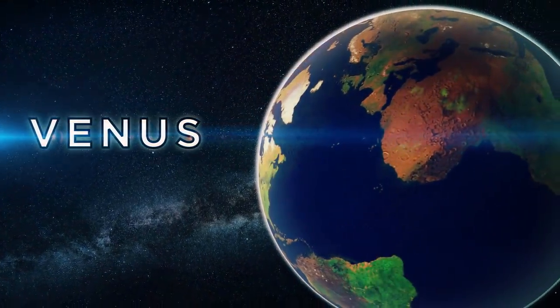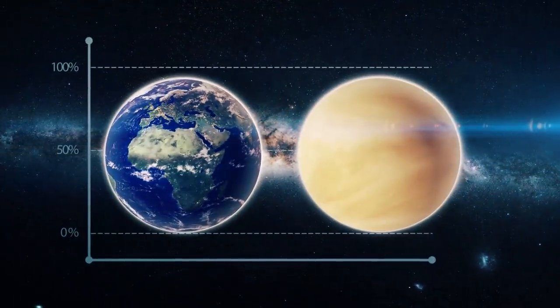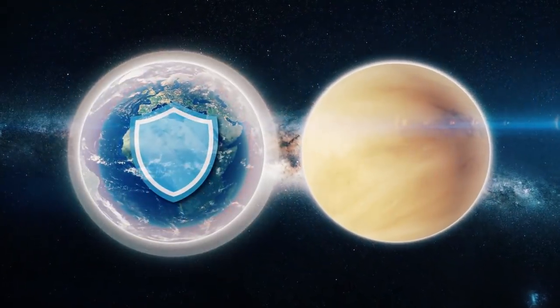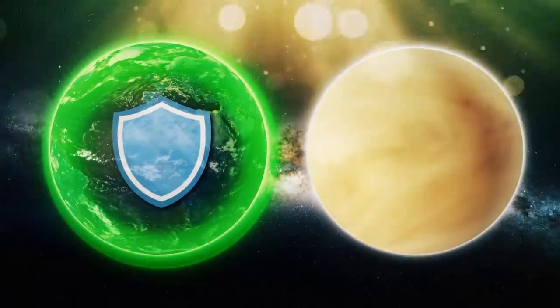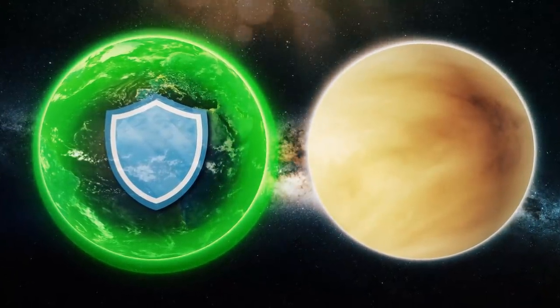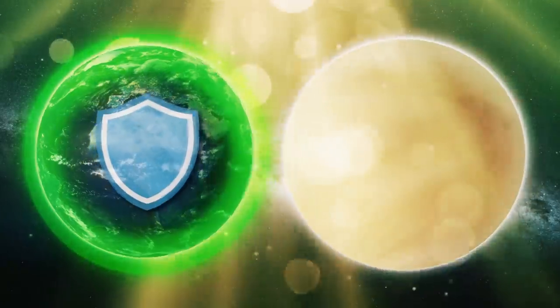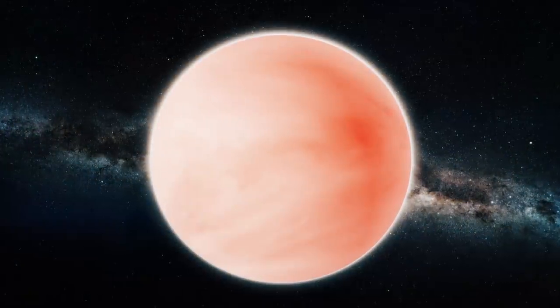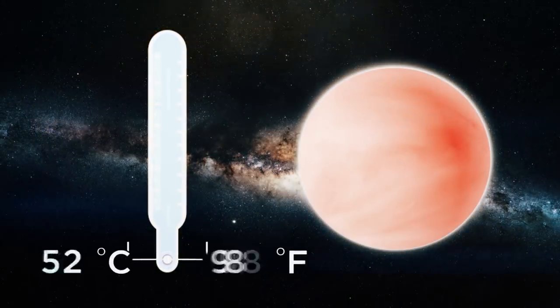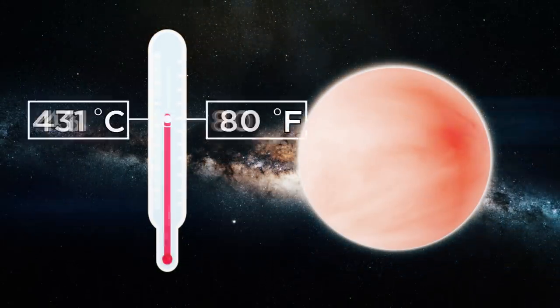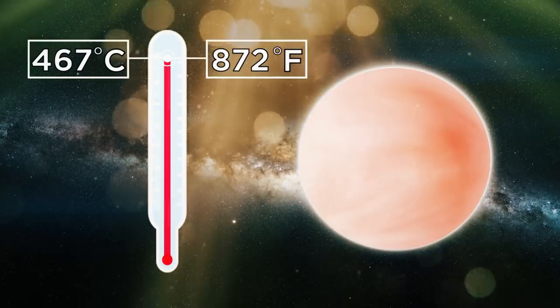This is what scientists believe happened to Venus, which long ago was covered by vast oceans. Venus is quite similar to the Earth in terms of both size and gravity. One key difference between the two is that Venus does not create its own magnetic field. Solar wind carries an electrical charge that our own magnetosphere is able to deflect, but Venus is not so lucky. Its water evaporated long ago, and it has no protection from solar radiation. This explains why its surface temperature is an astonishing 872 degrees Fahrenheit, or 467 degrees Celsius.